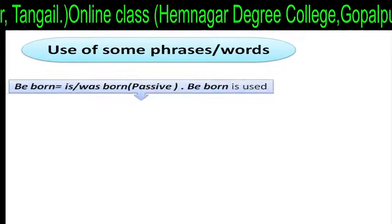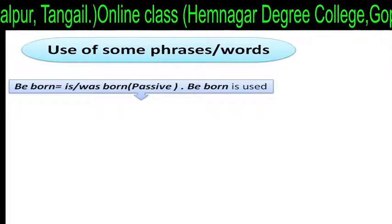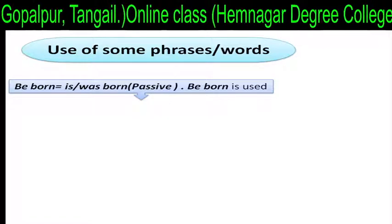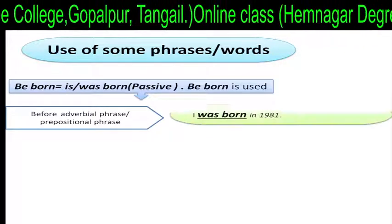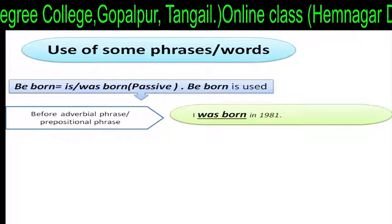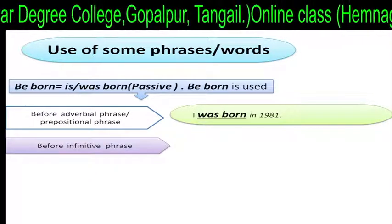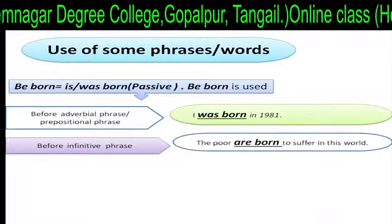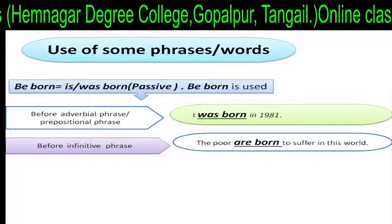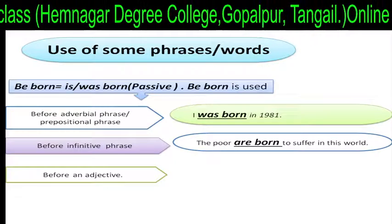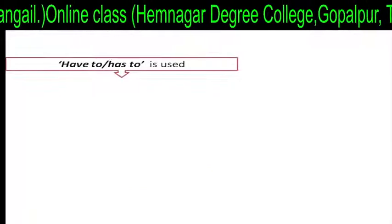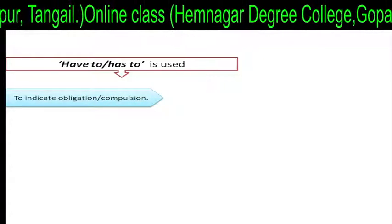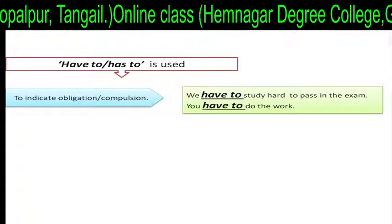Be born: 'is born' or 'was born'. In passive voice, 'be born' is used before an adverbial phrase or prepositional phrase. For example: 'I was born in 1981.' 'Be born' is used before an infinitive phrase. For example: 'The poor are born to suffer in this world.' 'Be born' is used before an adjective. For example: 'He was born blind of one eye.'